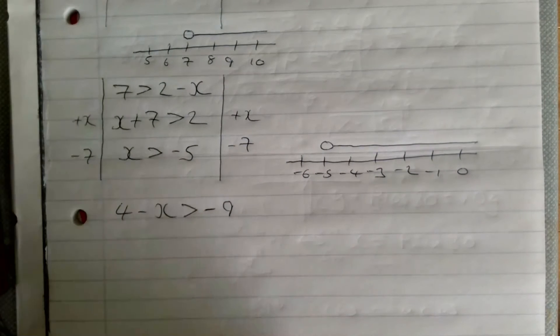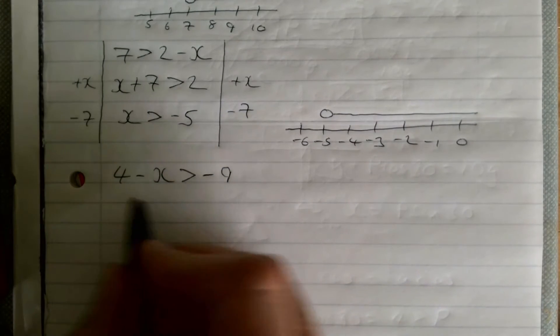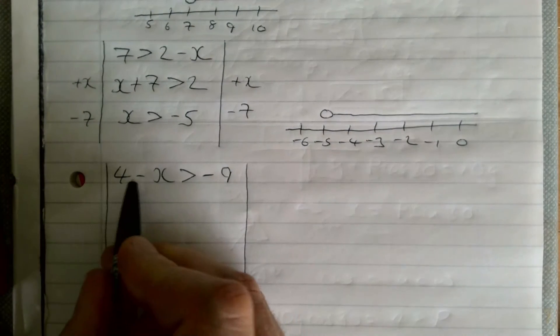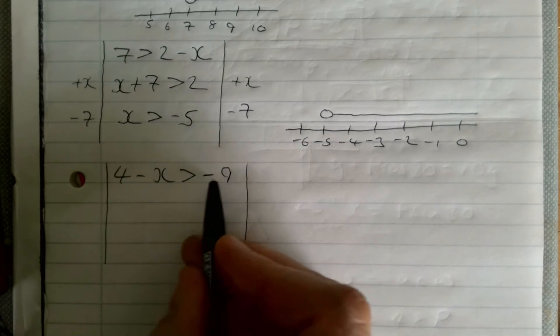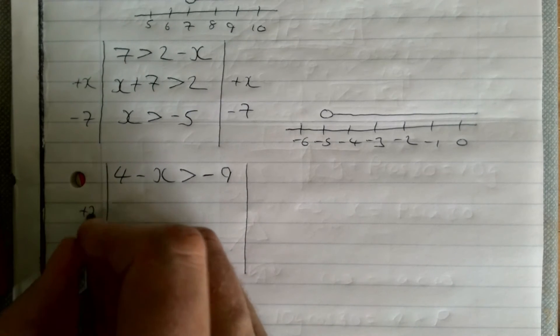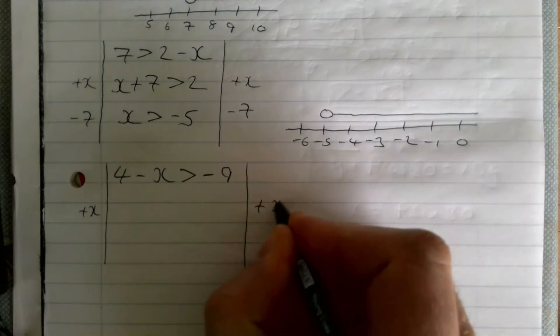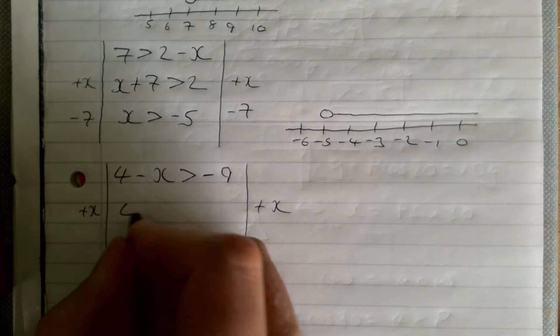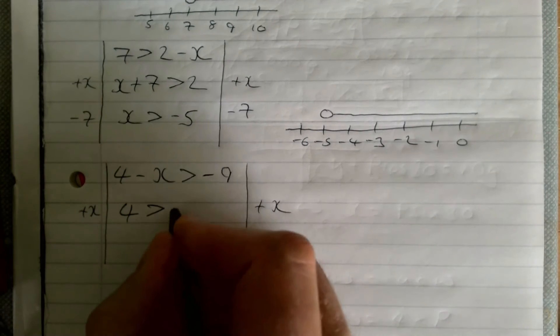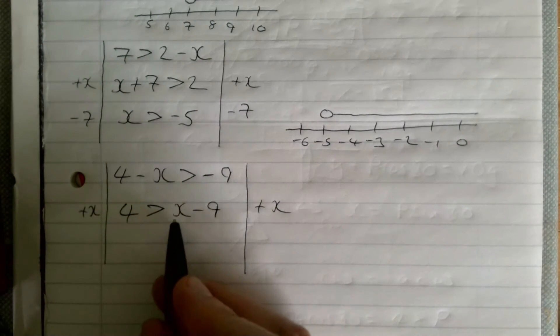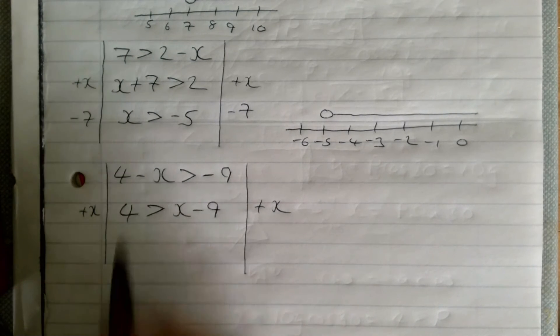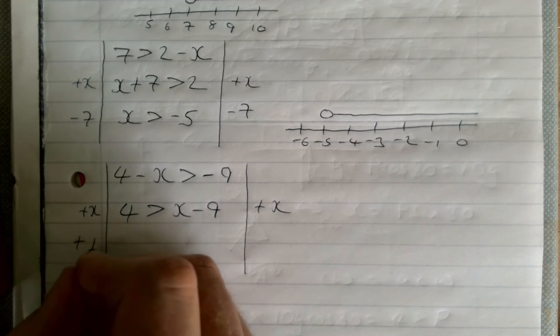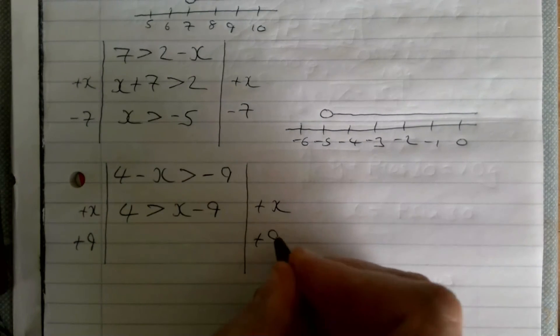Finally, this example here. Again a bit tougher but should be okay. We have a minus x here with a zero x here. Get rid of your smallest value of x, so we're going to add x to both sides. Now it's going to make the x on the wrong side but we need to deal with that later. Adding x to both sides gives us 4 is greater than x minus 9. We want to get rid of the minus 9, so we would add 9 to both sides.